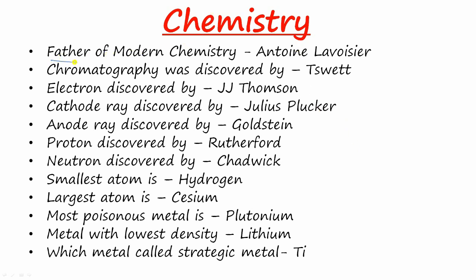The first question is: who is known as the father of modern chemistry? The answer is Antoine Lavoisier. Chromatography was discovered by Tswett, and electrons were discovered by J.J. Thomson. Cathode rays were discovered by Julius Plücker and anode rays were discovered by Goldstein. Protons were discovered by Rutherford and neutrons were discovered by Chadwick.